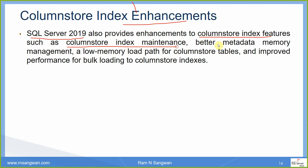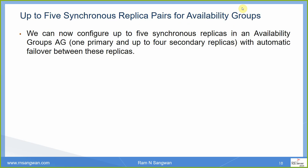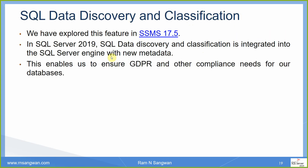Column store index enhancements include: better metadata memory management, a low-memory load path for column store tables, and improved performance for bulk loading to column store indexes. SQL Server 2019 also supports resumable online index creation. Additionally, availability groups now support up to 5 synchronous replicas — one primary and up to 4 secondary replicas with automatic failover for higher availability.